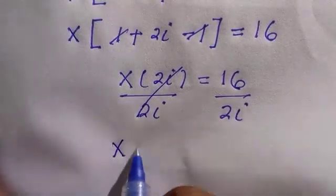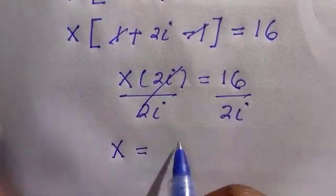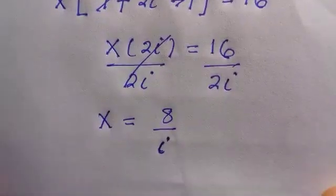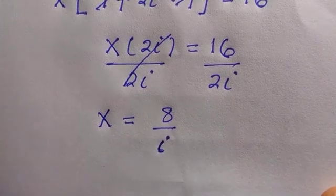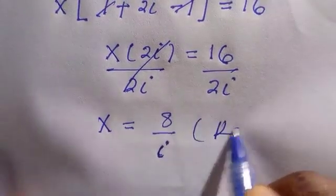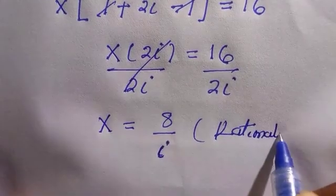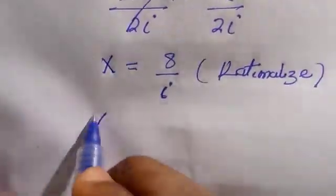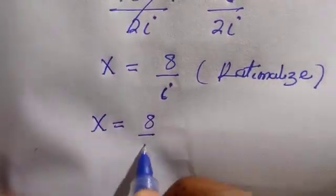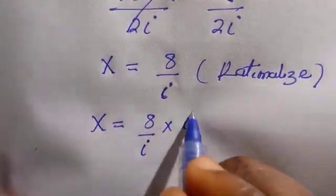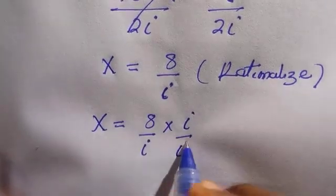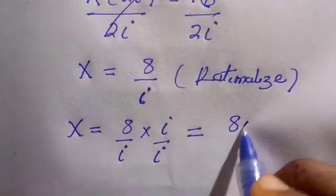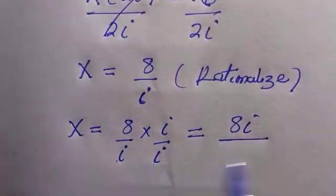We are looking for the value of x. We can just divide by 2i and we have 2i cancelled 2i where we have only x equals, you know, 2 in 16 is 8 divided by i. It's not really making sense, so if x equals to 8 over i, we are just going to rationalize this, so I don't want to see anything like i in the denominator. By doing that, we have 8 divided by i multiplied by i divided by i.